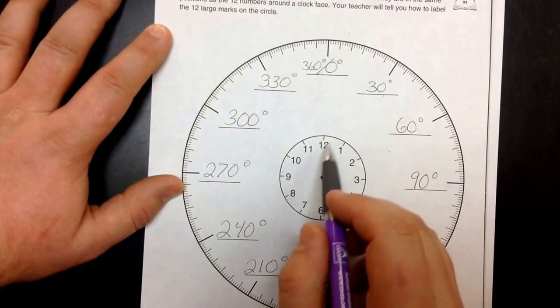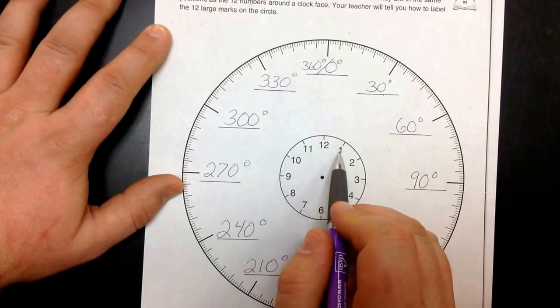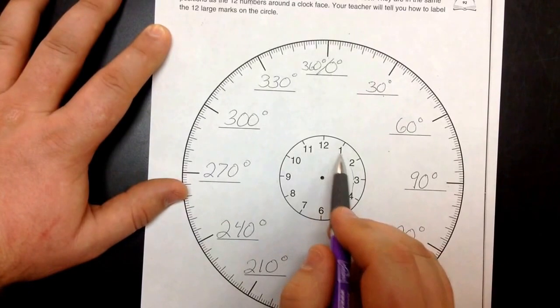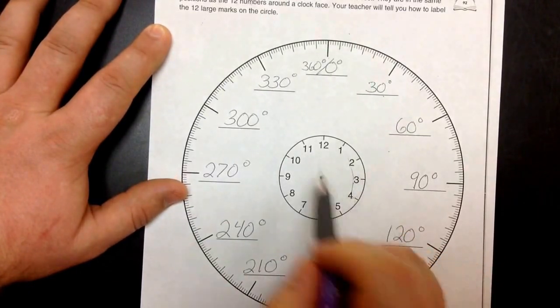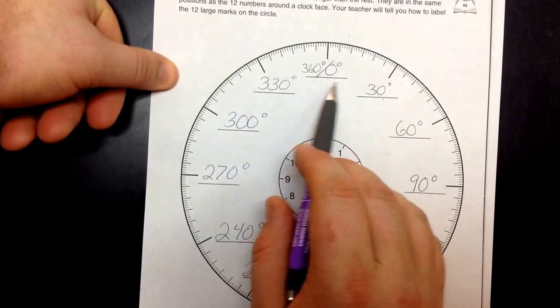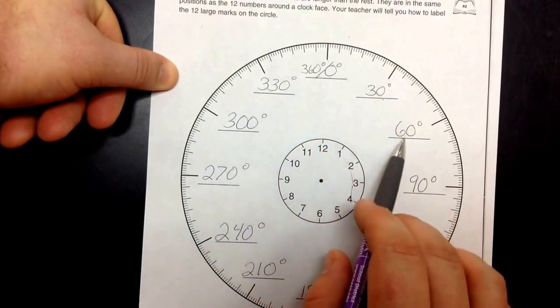So when we look at the clock and we're thinking minutes, we move five minutes between each number, right? Five minutes between each: 5, 10, 15, 20. In degrees, on a full circle protractor, we're moving 30 degrees: 30, 60, 90.